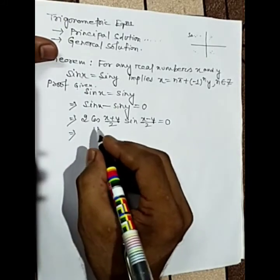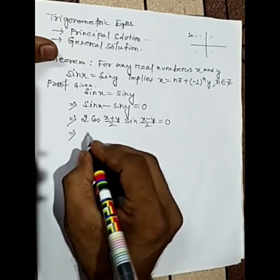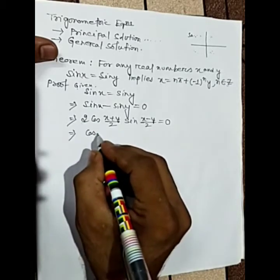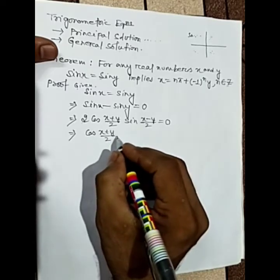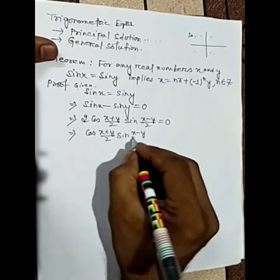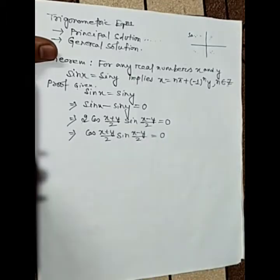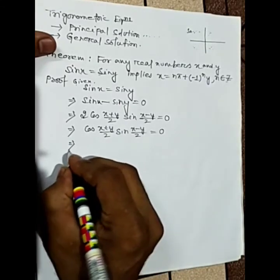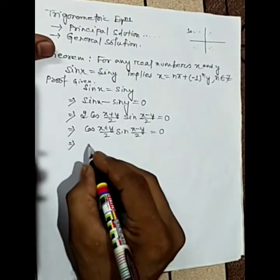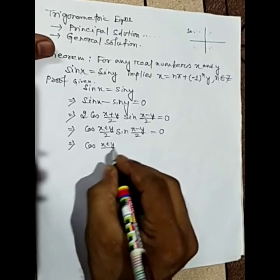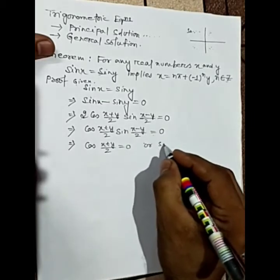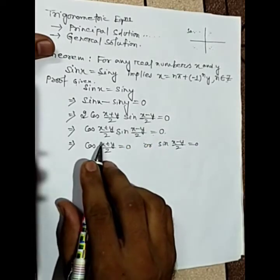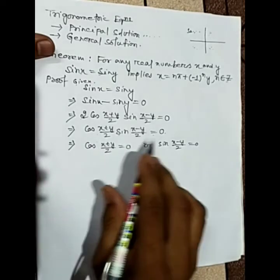From the formula we get cos((x+y)/2) · sin((x−y)/2) = 0. Now, A × B = 0 means A = 0 or B = 0. So multiplication of two terms equal to zero means either the first term is zero or the second term is zero.